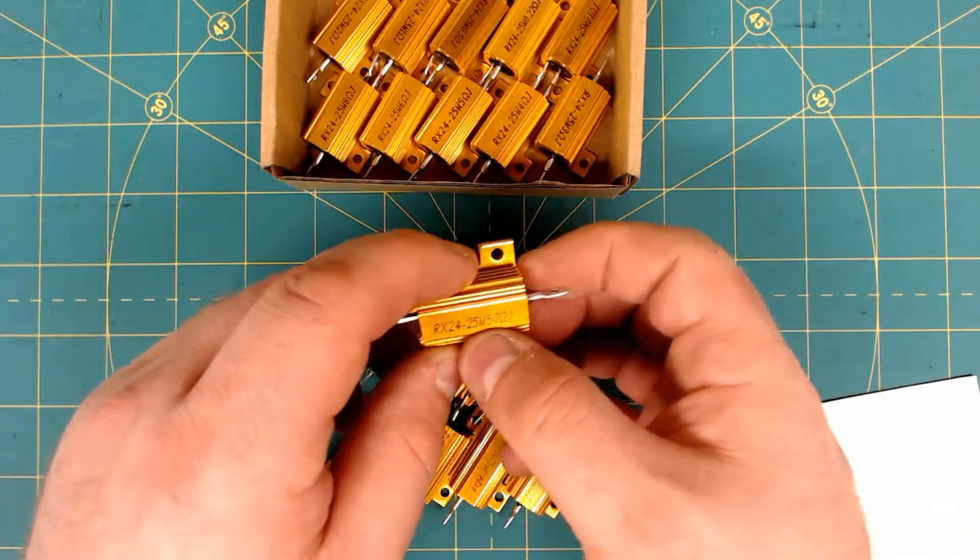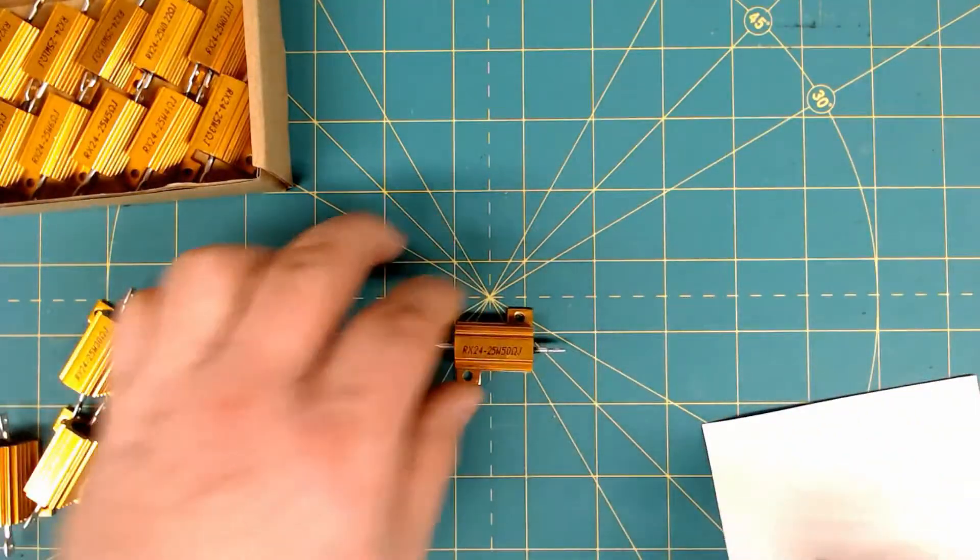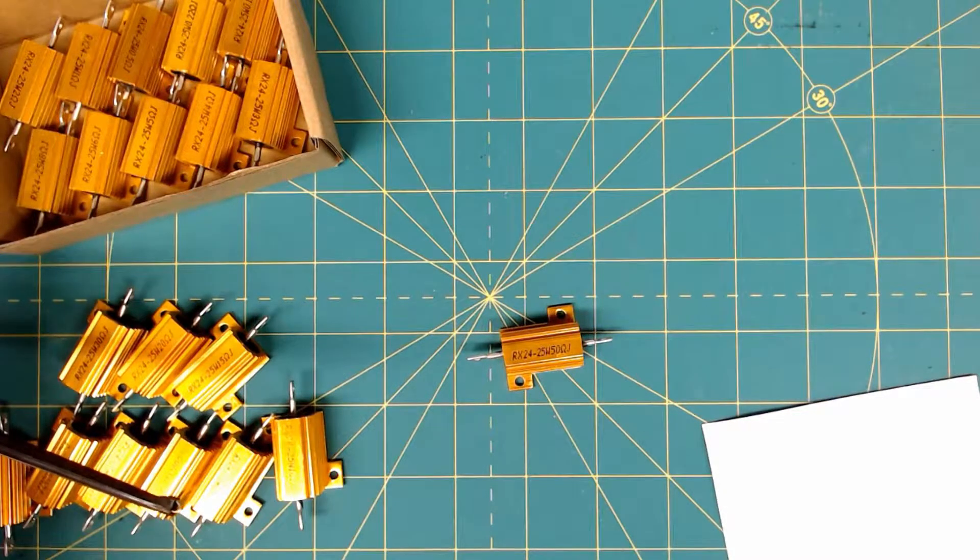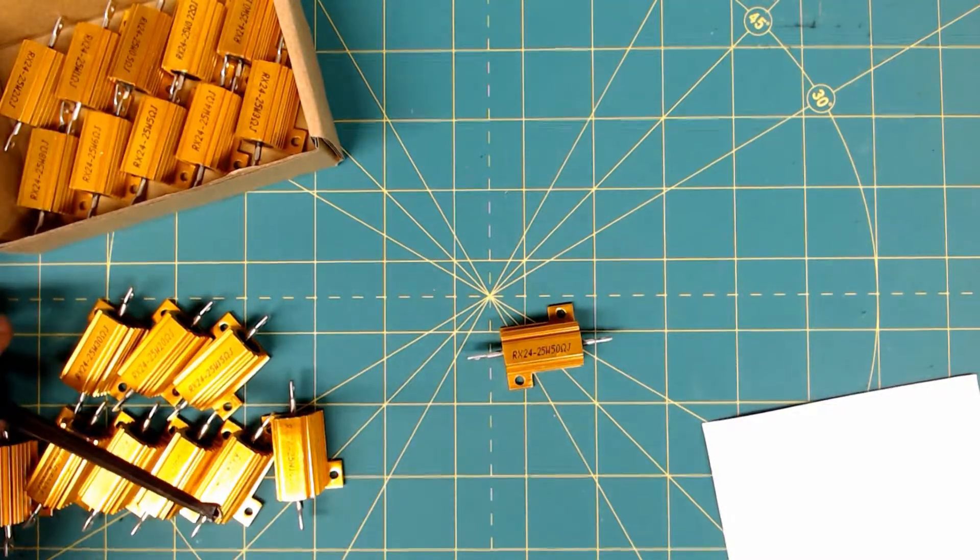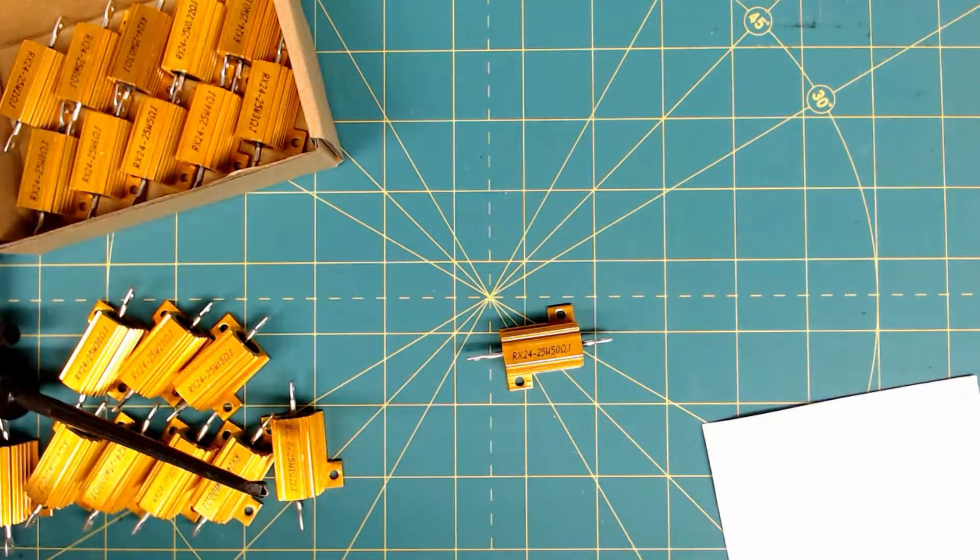And they're marked right on here what they are. So here's a 50 ohm, 25 watt, 50 ohm. So let's go ahead and hook that up to the meter, just so we can at least see one reading. Turn the meter back on. Oh, it probably would be good if I actually showed you the meter here.